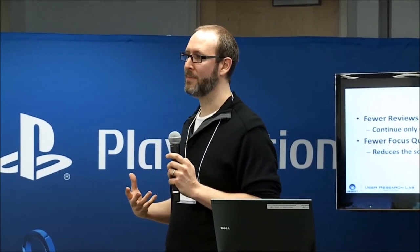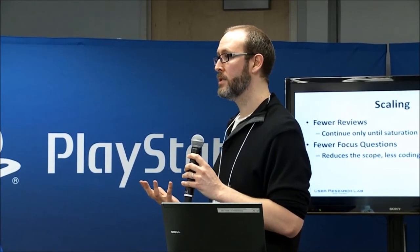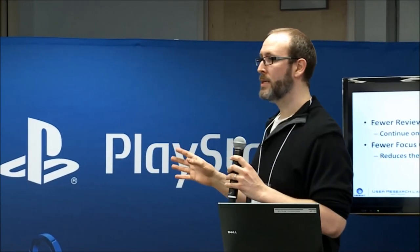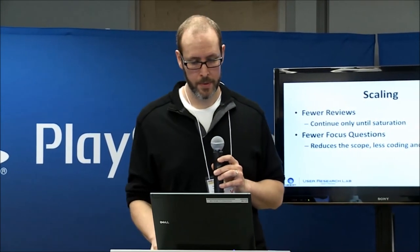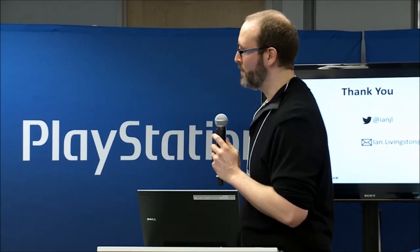If you want to scale this down, there are two easy ways. First, look at fewer reviews — we look at 30, but you can look at less, continuing until you reach saturation. Second, ask fewer focus questions — we do between six and eight, but you can literally ask just one focus question. For example, if you're interested in how reviewers talked about your narrative, just ask how the narrative was described positively and negatively. This instantly reduces the amount of coding and memoing needed, decreasing the work exponentially. In conclusion, I've briefly shown you how to do this process at Ubisoft Montreal, and hopefully convinced you why it's important for user researchers to do this analysis in an objective and rigorous manner.